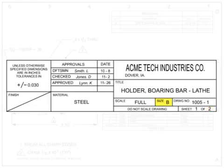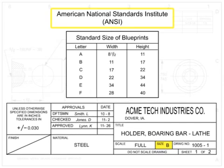The size of the drawing indicates what size paper the drawing should be printed on to be true to scale. There are many different types of drawing size standards, but the most commonly used in the United States is the American National Standards Institute (ANSI), which is also required by the ASME Y14 drawing standard. The farther in the alphabet the letter, the larger the drawing size.